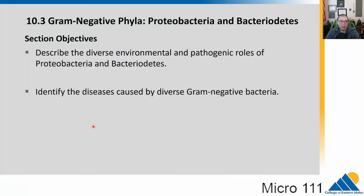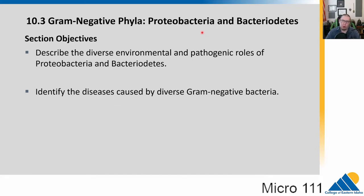We are into the gram-negative phyla now, and we have two of these: proteobacteria and bacteroidetes. We have a super huge amount of diversity in the proteobacteria, and the bacteroidetes are very important for us microbiologically in our gut.